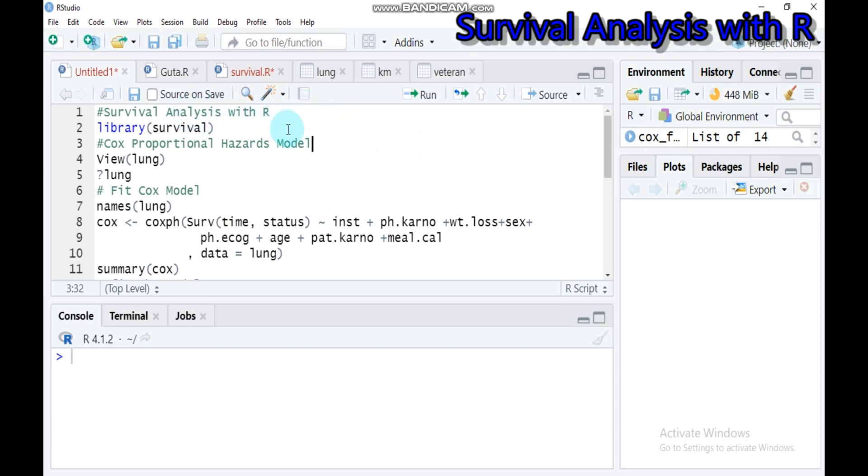There are different methods to carry out survival analysis using R software. Today we will focus on the Cox proportional hazards model. This model is essentially a regression model commonly used in medical research for investigating the association between survival time of patients with one or more predictor variables.